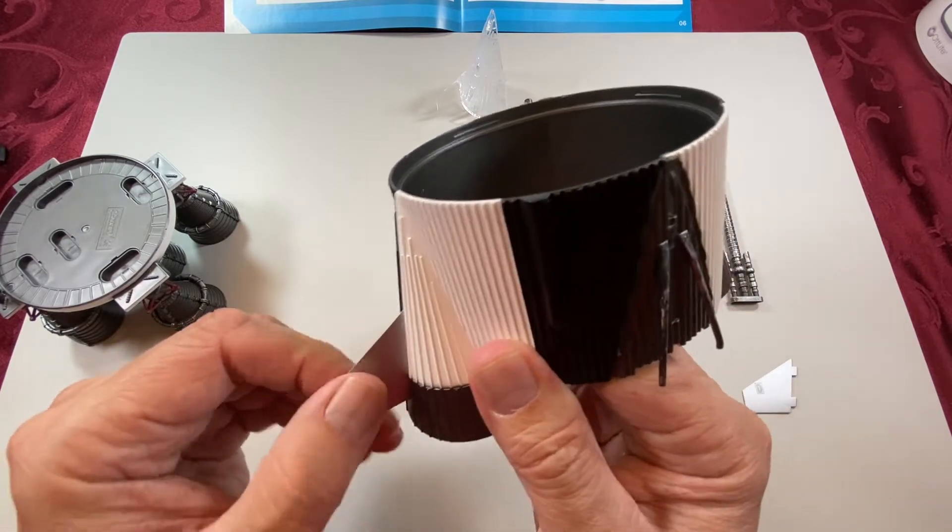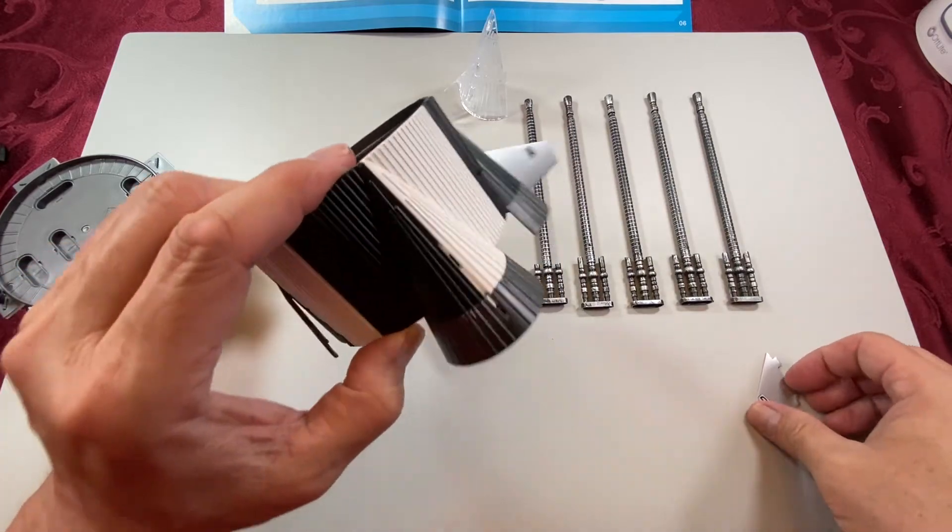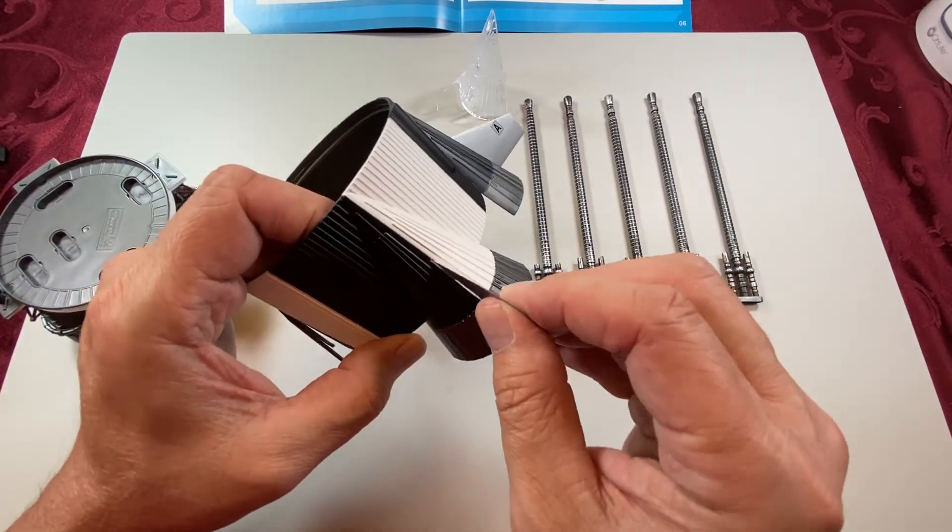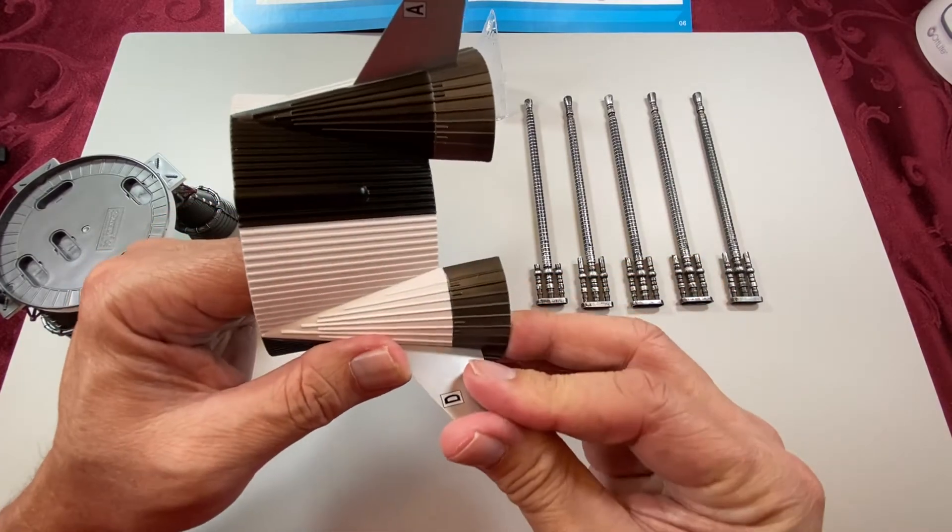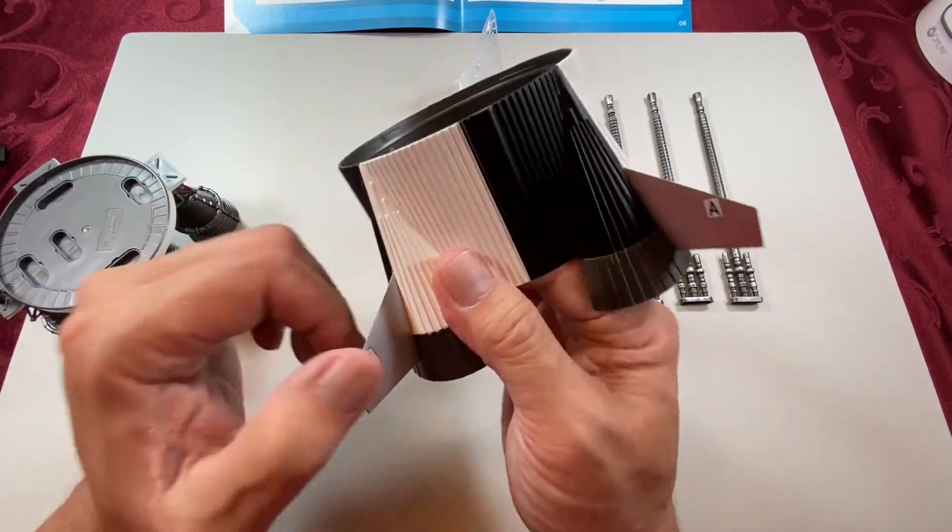Again, counterclockwise. That one's loose. It's supposed to be staying. And then D, that one was a pretty good tight fit. I don't think that one would go anywhere.